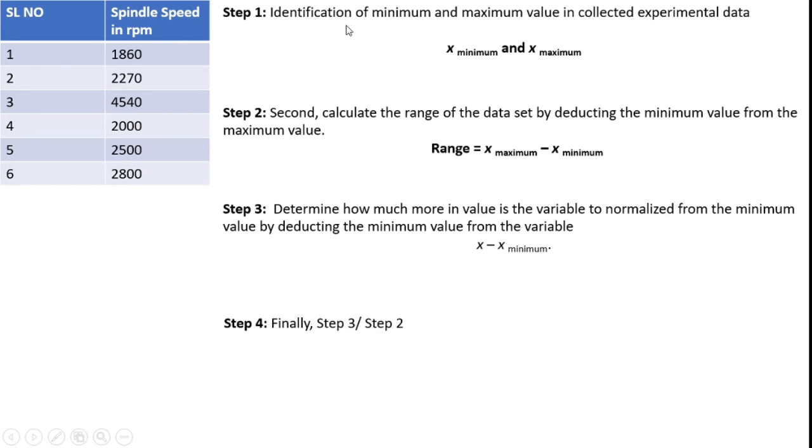How do we conduct a normalization procedure? For example, if you are considering this table, there are six serial numbers available. In that serial number, different spindle speeds are also available from 1860 to 4540. In step 1, the step 1 is identification of minimum and maximum value in collected experimental data. According to this table, the maximum and minimum values, we have to identify.